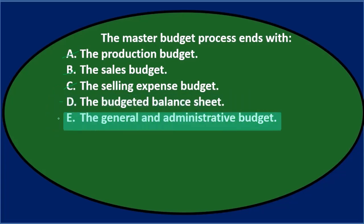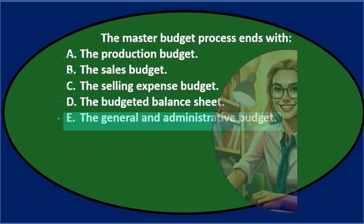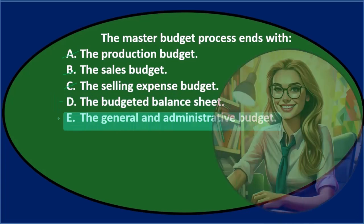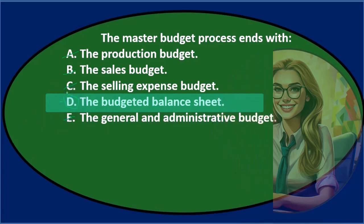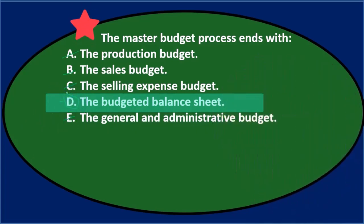The general and administrative budget doesn't sound like a finale — it's not the big ending we're looking for. So the final answer: the master budget process ends with D) the budgeted balance sheet.